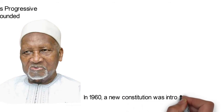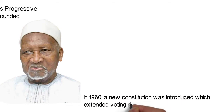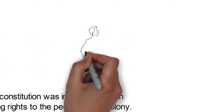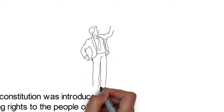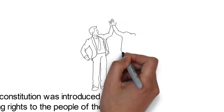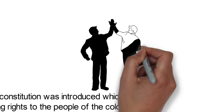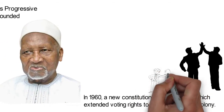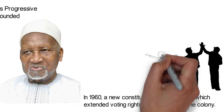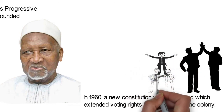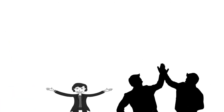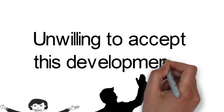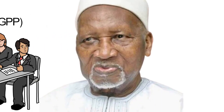In 1960, a new constitution was introduced which extended voting rights to the people of the colony. At the elections held in 1960, the two major contenders were the United Party and the PPP. Both parties won eight seats apiece. The governor at the time, Edward Windley, decided to appoint NJ of the United Party as the chief minister because the majority of the chiefs showed their support for him. Unwilling to accept this development, Jawara resigned his position as the Minister of Education.